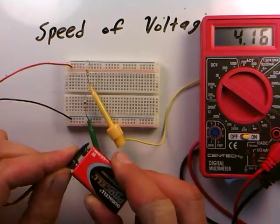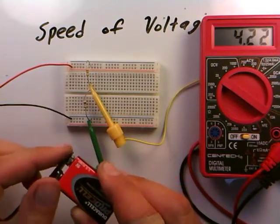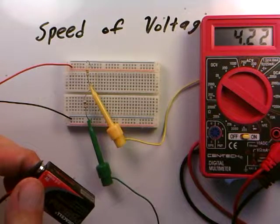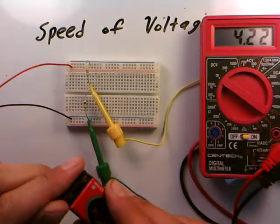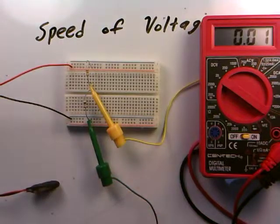3, 2, 1. So it appears almost immediately. Now the fiddling around of the digits aren't anything to do with the circuit. That's more to do with the meter determining the best voltage to present. But as you can see, that voltage appears immediately.